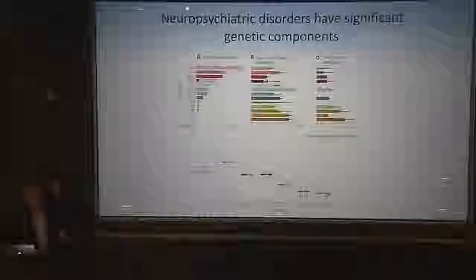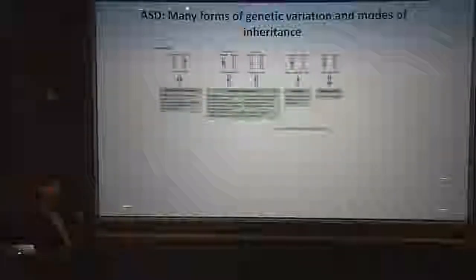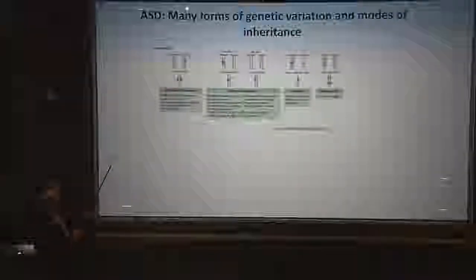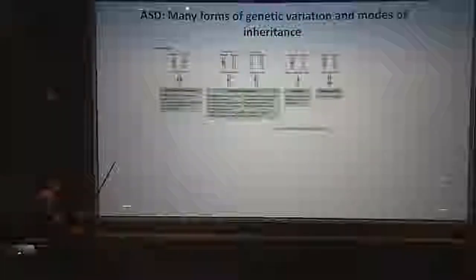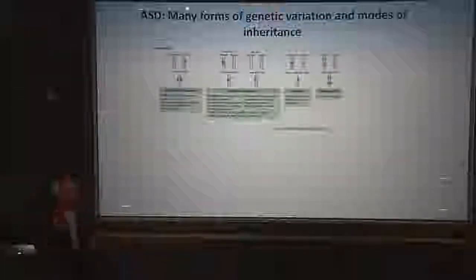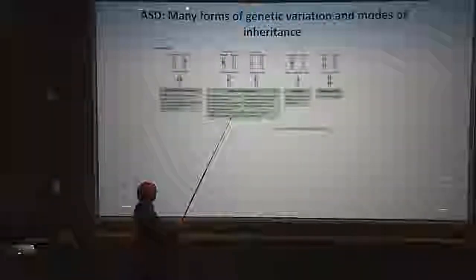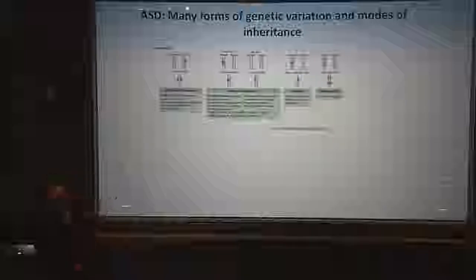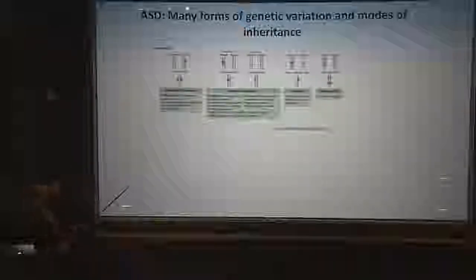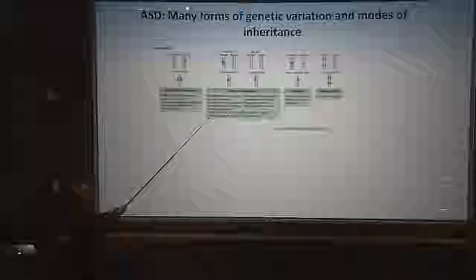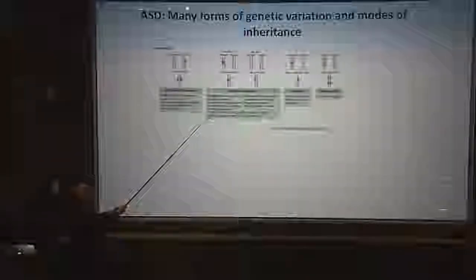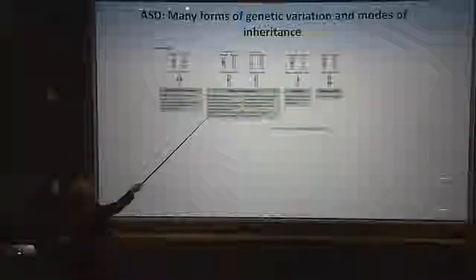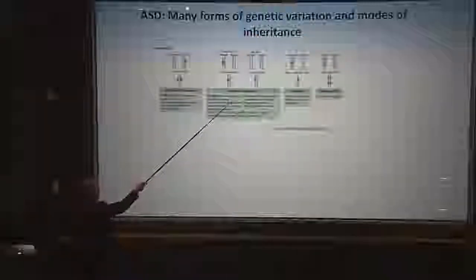Now I'll tell you a little about autism. First, there's not one form — autism isn't recessive, it's not all de novo, it's not all additive common variation risk. All of these things actually contribute. So far, the lowest-hanging fruit and the most power has come from identifying mutations acting in a dominant fashion — de novo mutations not present in the parents but occurring in the germline.